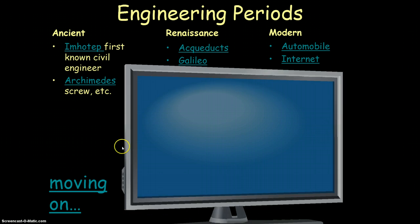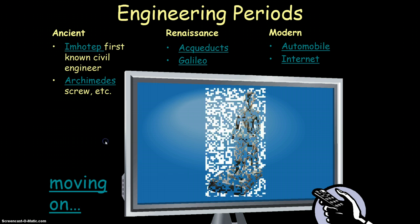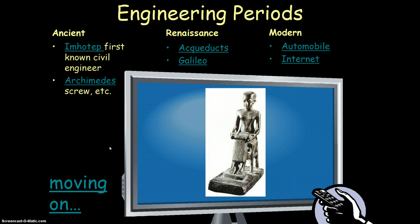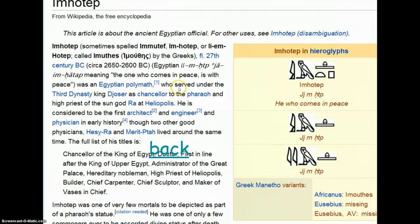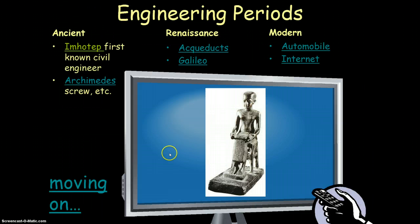Here's a picture of a statue of a man named Imhotep. Imhotep is generally regarded as the world's first civil engineer. He was an Egyptian engineer who worked for the Pharaoh. The Egyptians are credited with inventing irrigation — pulling water from a nearby river to feed farmland nearby. Imhotep designed and built the step pyramid for the Pharaoh, so that's an early example of civil engineering.